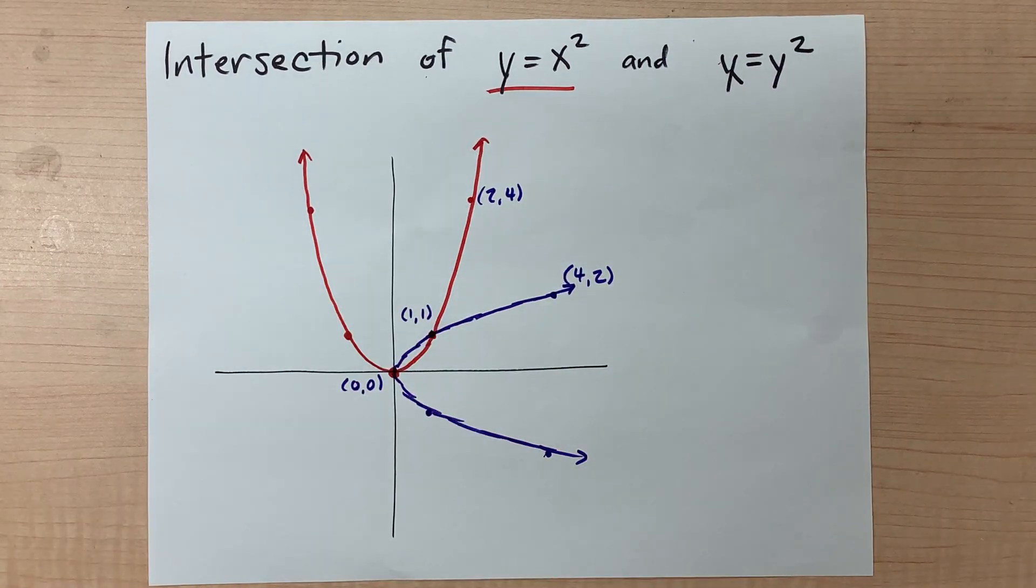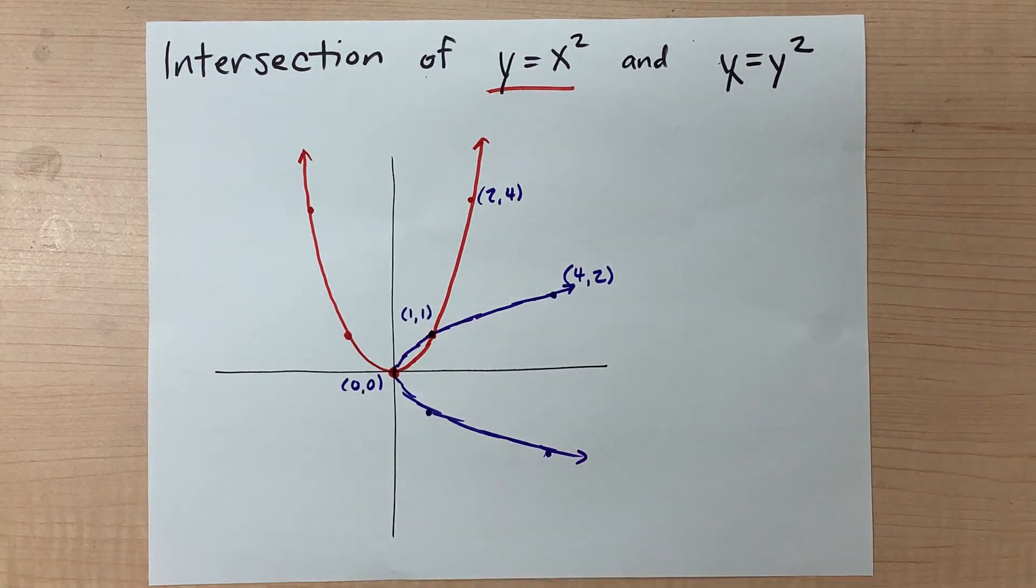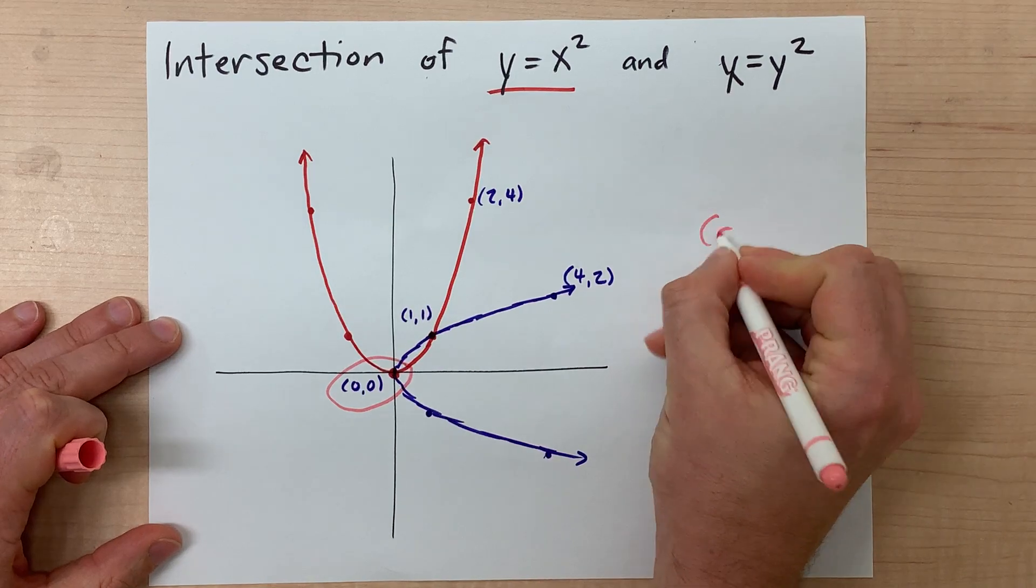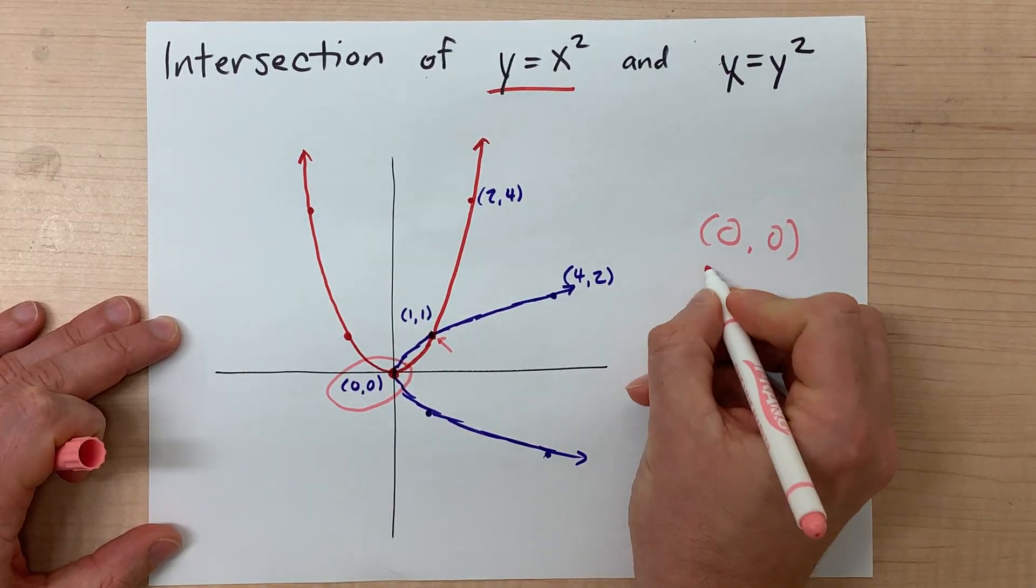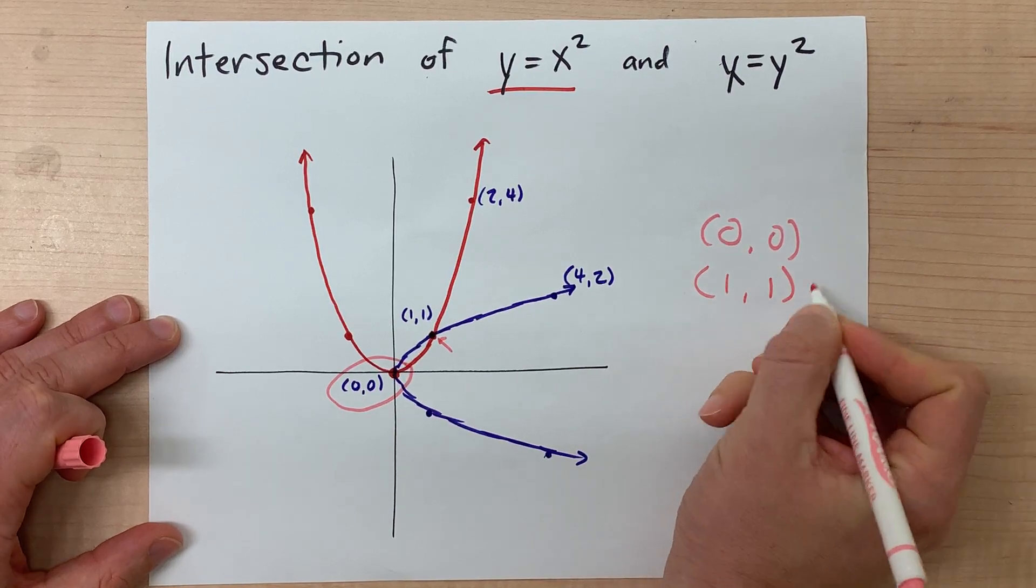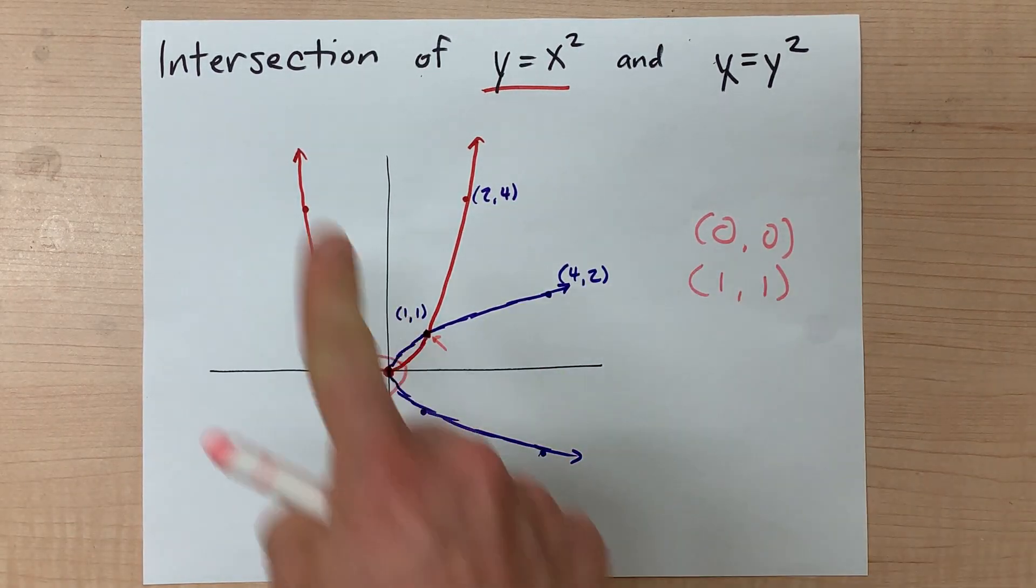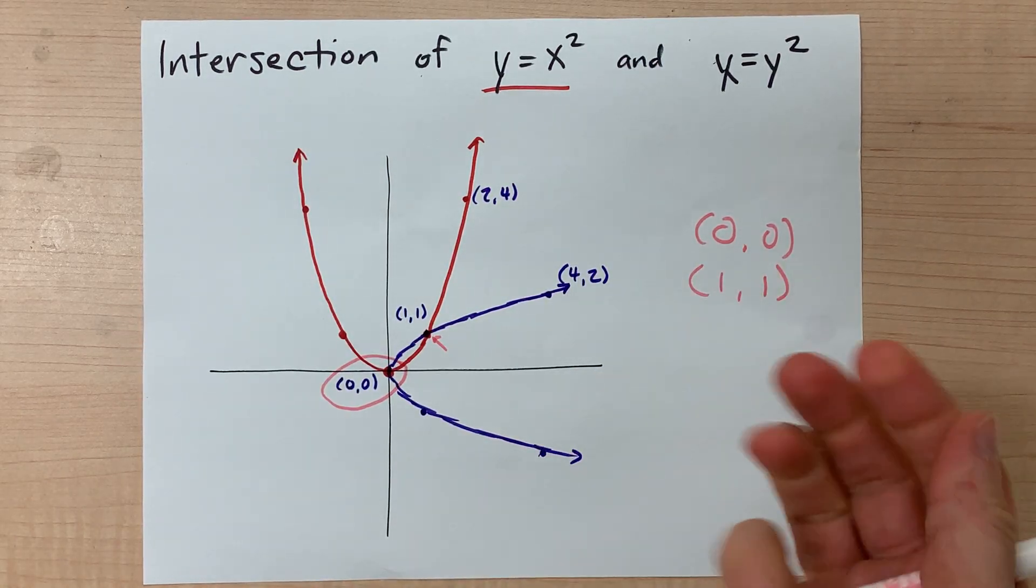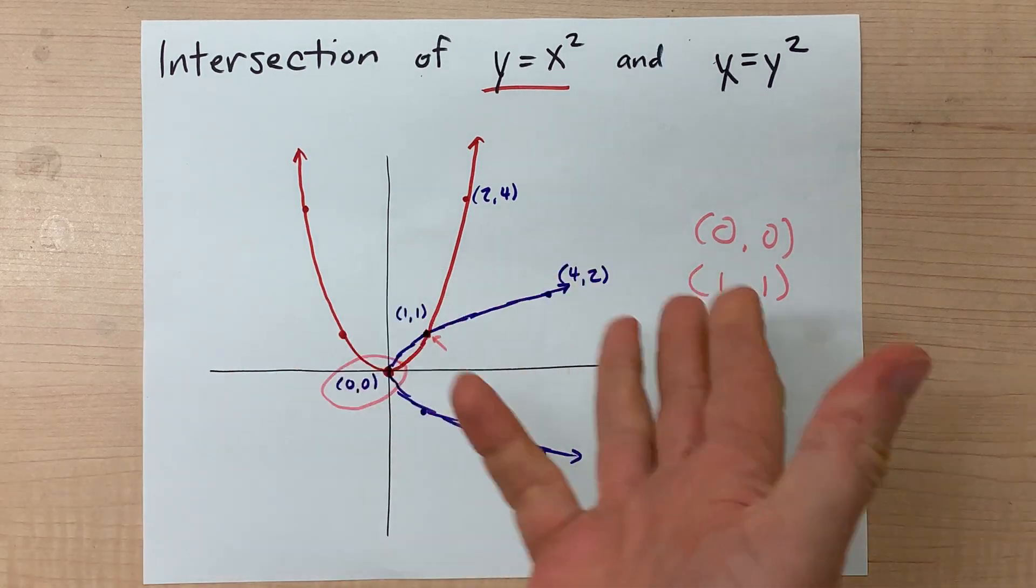Anyways, the points of intersection between these two curves are the points where they meet. So one of them is here, the point (0,0) is one of the points of intersection, and the only other one is here at (1,1). Again, you'll note that these are the points on the original parabola where the x and y coordinates are equal to each other. Very nice. Now, that's how you do it graphically.